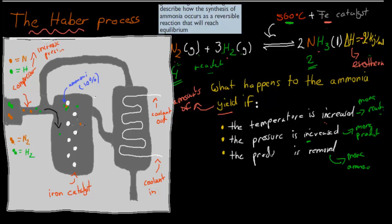Remember, only about 10% of the total reactants will actually turn into ammonia per cycle, so the other 90% will remain as nitrogen and hydrogen gas. After the ammonia has formed, all the gases — both ammonia and the remaining reactants — go into the cooling chamber. Because ammonia has a much lower boiling point, it condenses out and becomes a liquid, which can be drained and removed from the system. The remaining gases — still in gaseous form — continue through the cycle again. This constant removal of ammonia from the equilibrium causes the reaction to keep shifting to the right to produce more and more ammonia.